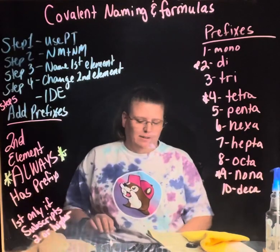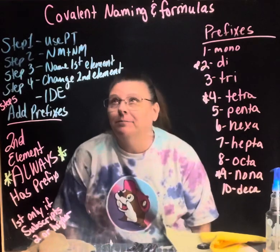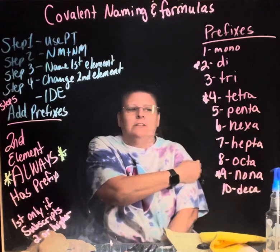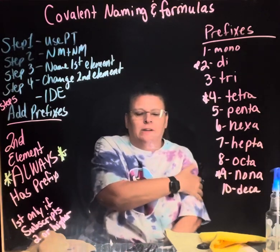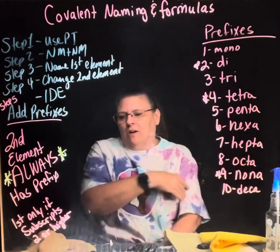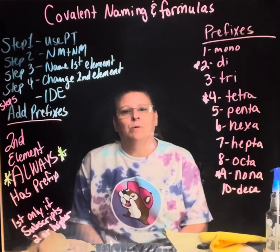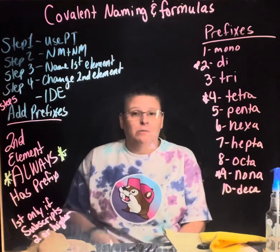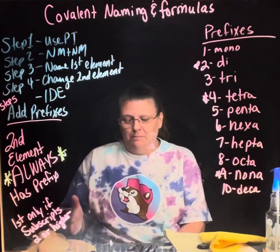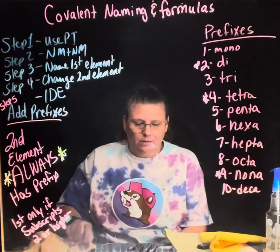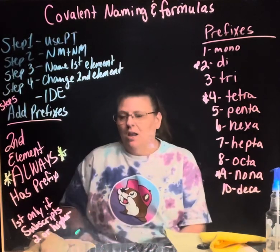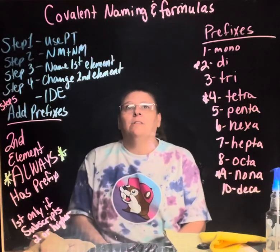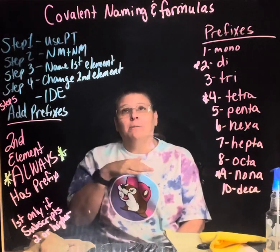Covalent naming and formula writing. If you're in honors you don't know what a covalent bond is yet, but if you're on level you will. A covalent bond is between a non-metal and a non-metal, whereas an ionic bond is between a metal and a non-metal. So we have different naming rules for two non-metals together — covalent formulas and naming.